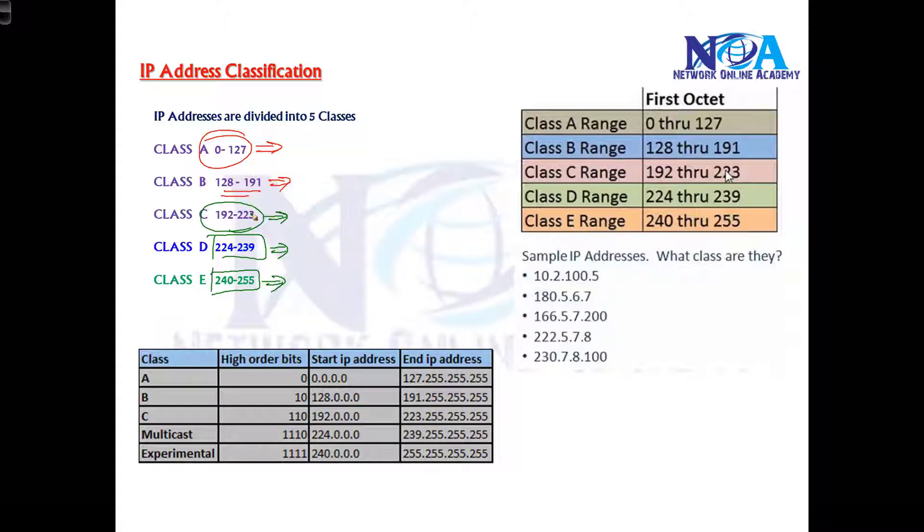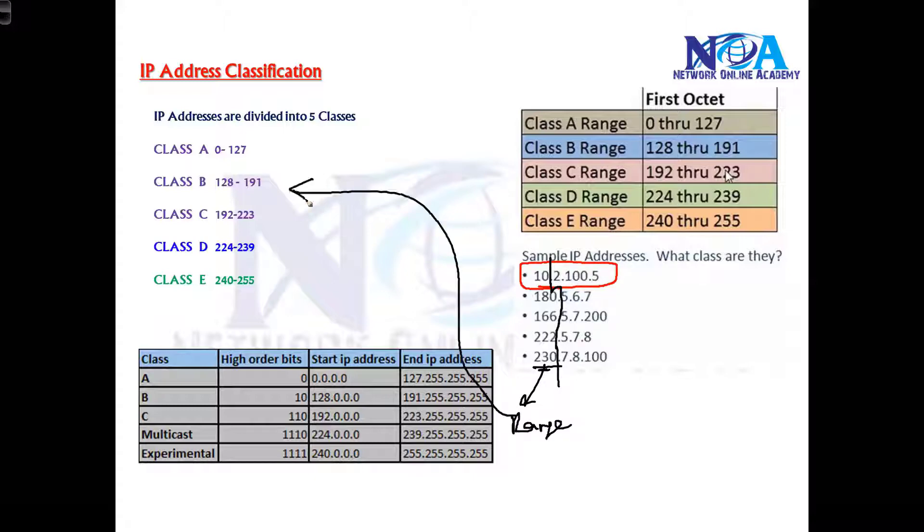Remember, these classes are based on the first portion, not based on the second, third portions. I got some examples here. Sample IP addresses I have given here. Now our job is to identify which class they belong to. So in this address, the classes are divided only based on the first portion. Remember this. So you have to see the first portion.